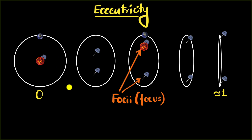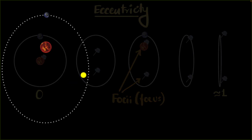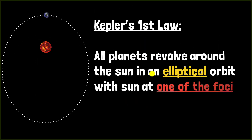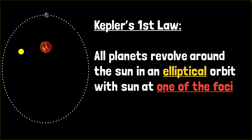Putting it all together, we can now write down Kepler's first law, which says that all planets revolve around the Sun in an elliptical orbit, with the Sun at one of the foci. It's one of three laws we'll study in this video, made by Johannes Kepler, who spent years recording the positions of the planets. Most planets have very circular orbits, but other objects like comets also orbit the Sun and have highly elliptical, highly eccentric orbits.